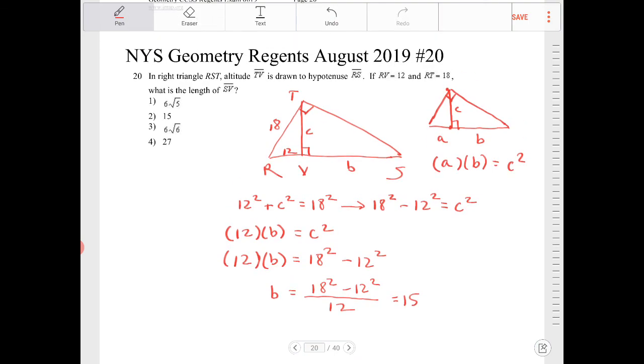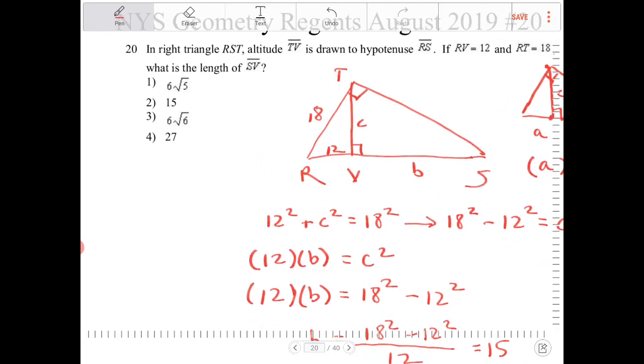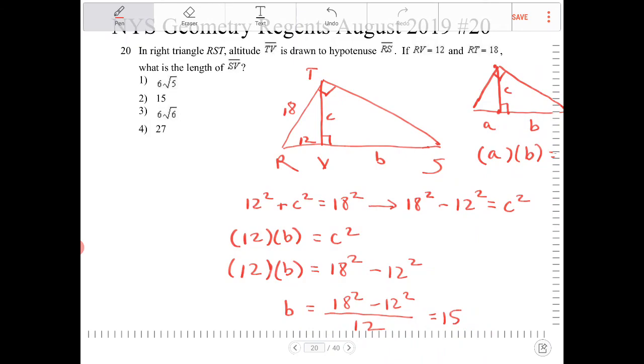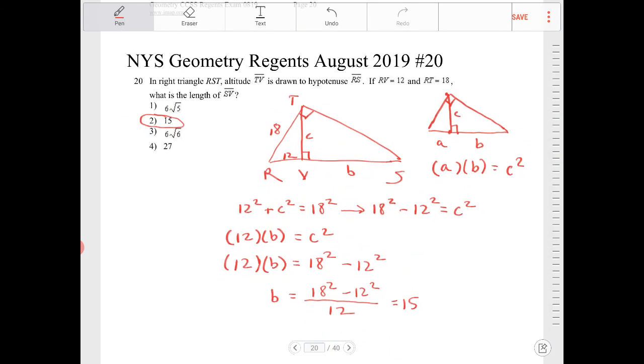So that means SV is equal to 15. So that means it's option two. Thank you.